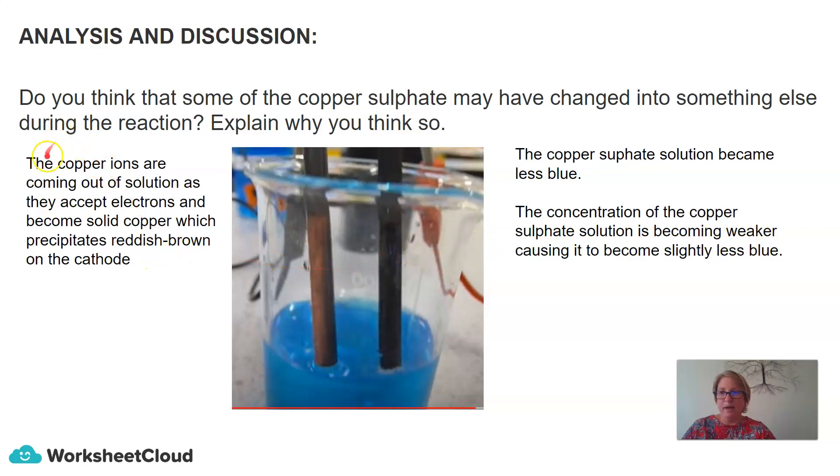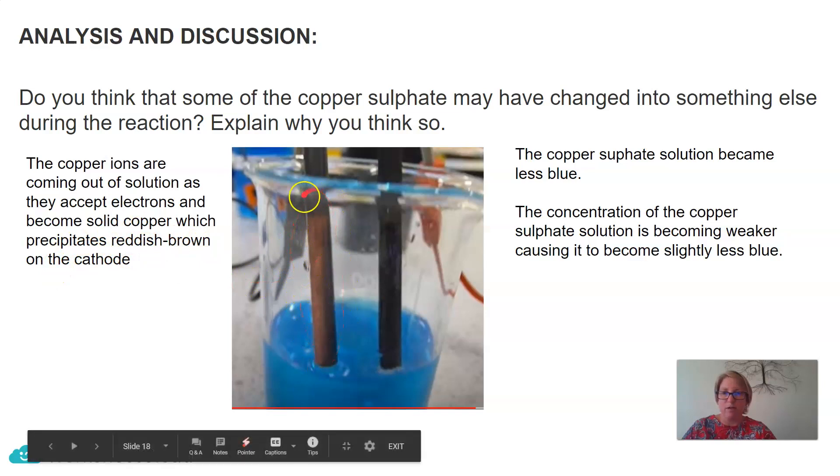And what was happening is the copper ions were coming out of the solution as they accept the electrons, and they became solid copper, which precipitated as a reddish brown on the cathode. So you can see the red brown color here.